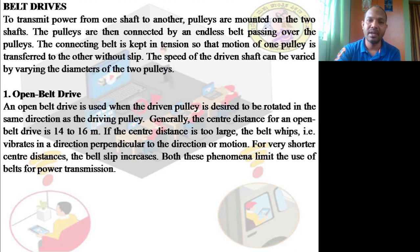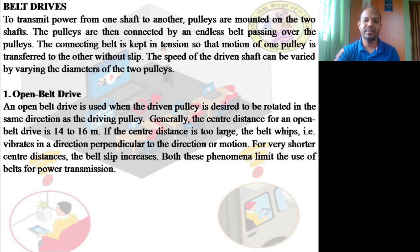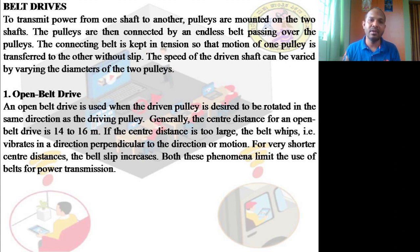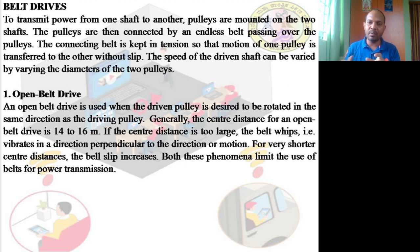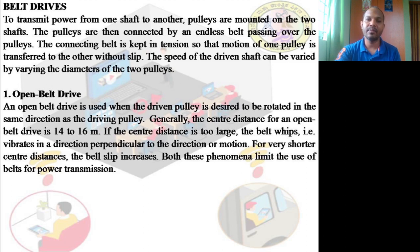When the driver pulley rotates, it causes a pulling action due to friction and causes the driven pulley to rotate in the same direction. If you want the driven pulley to rotate in the opposite direction — for example, anticlockwise when the driver is clockwise — you use a cross belt drive.